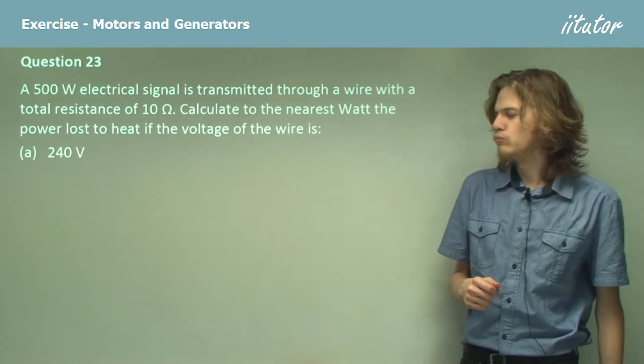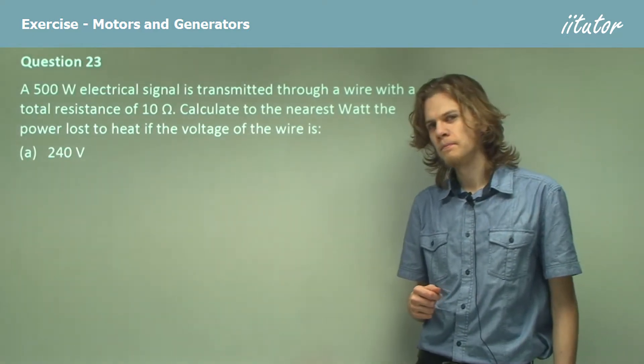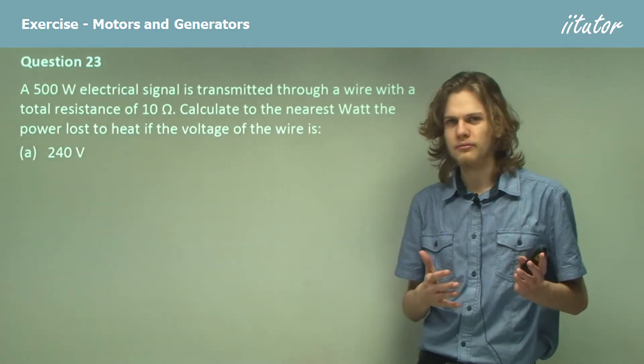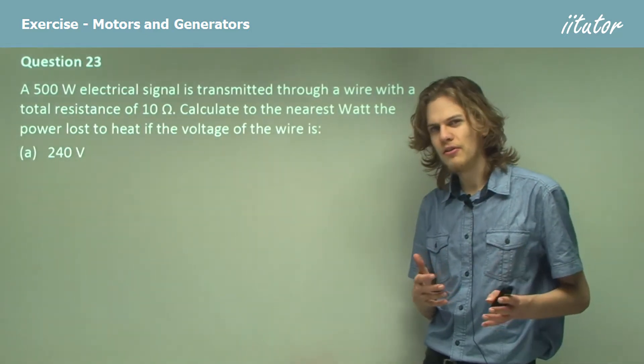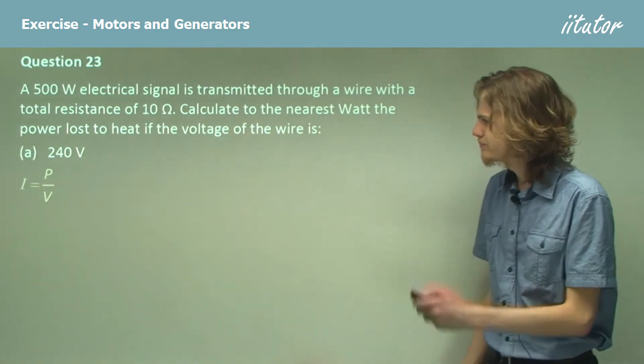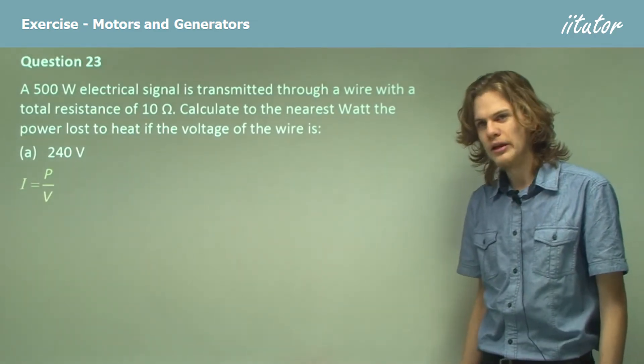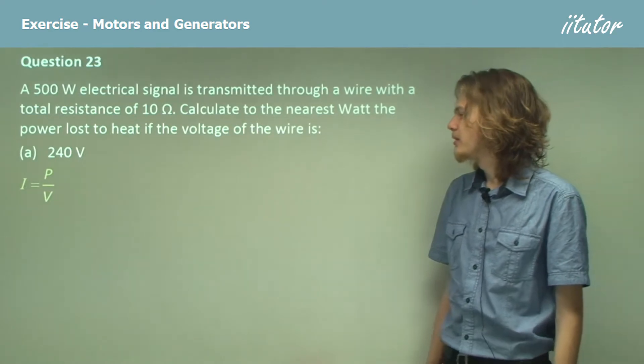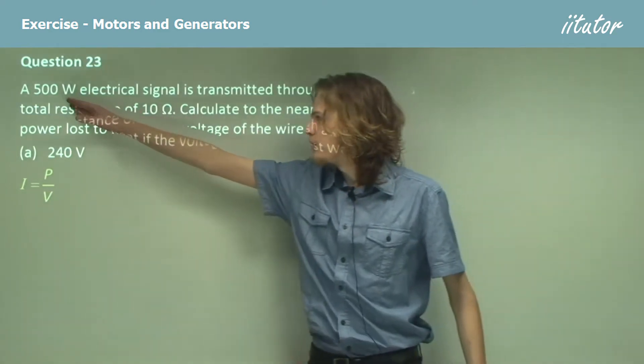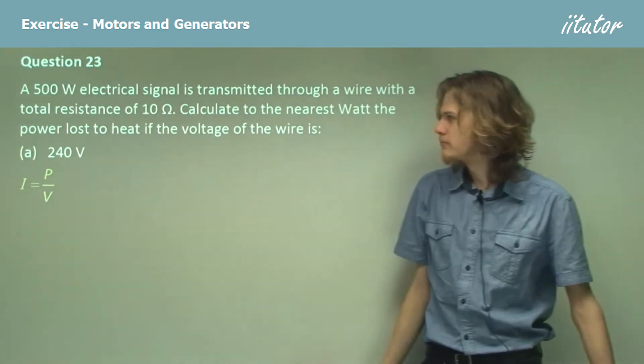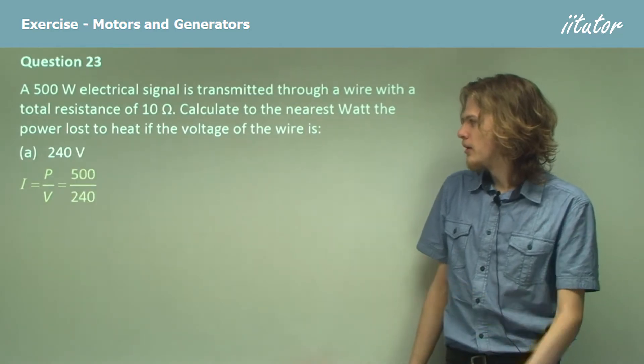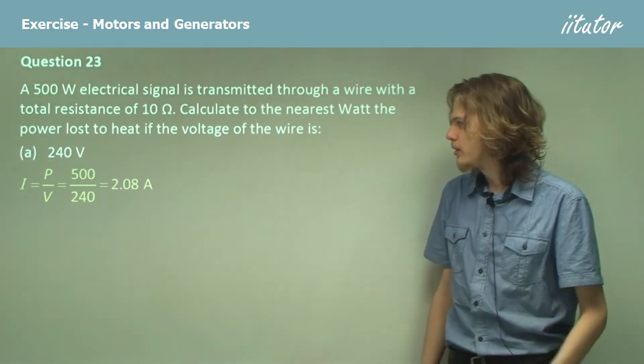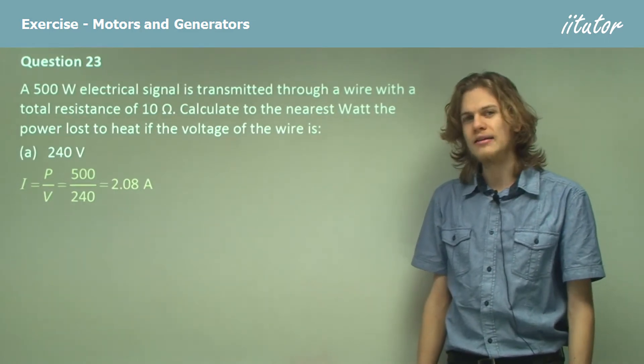So what equation do we use? Well if we want to figure out the power loss then we need to know the current. So how do we figure out the current? I equals P on V, where P is our 500 watts. So our current is going to be 500 over 240 volts, or 2.08 amperes.